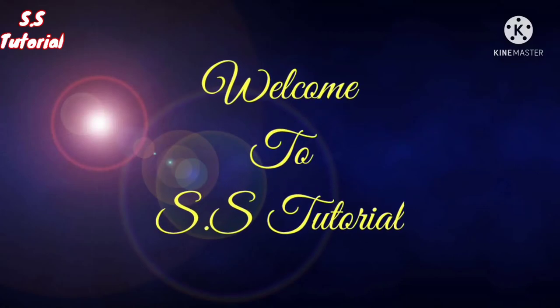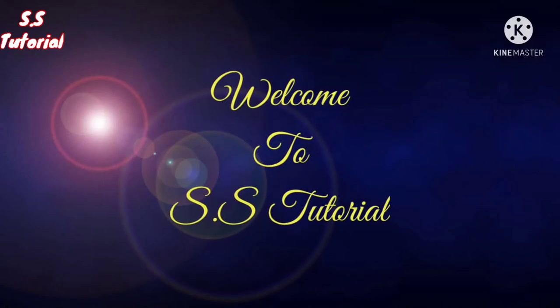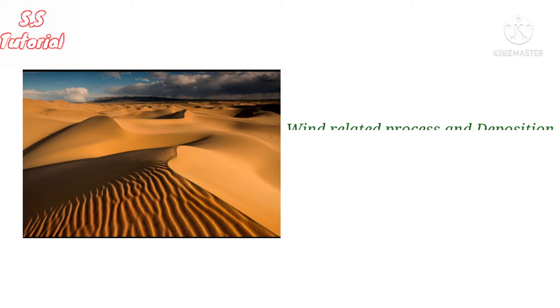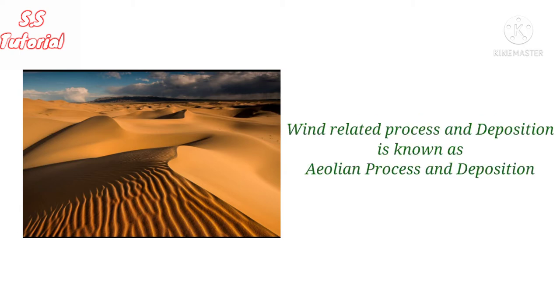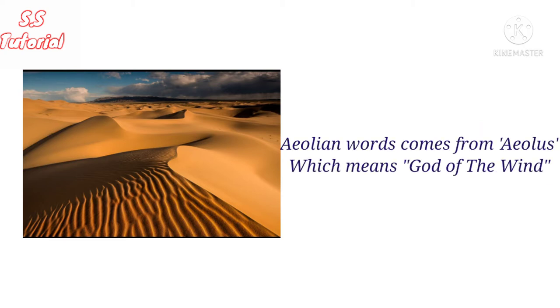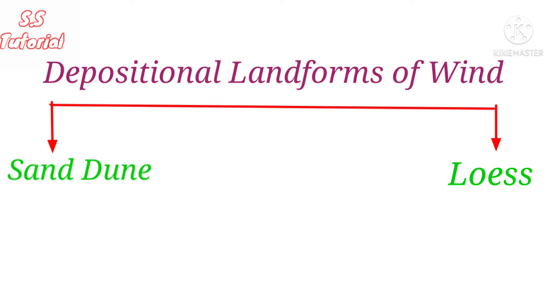Welcome to SS Tutorial. Today I have a new video on a very important topic, so please don't skip and keep watching. Today in this video we will know the depositional landforms made by the Aeolian process. Wind-related processes and deposits are also termed as Aeolian process and Aeolian deposit. The word Aeolian comes from the Latin word Aeolus, which means God of the Wind. There are only two types of depositional landforms made by wind, found in arid and semi-arid regions: sand dunes and loess.